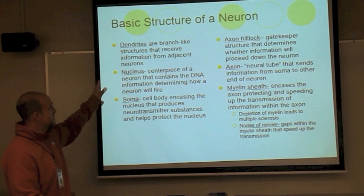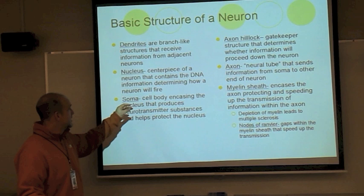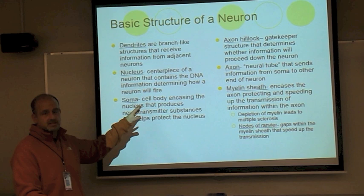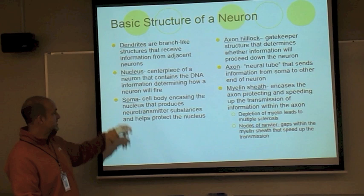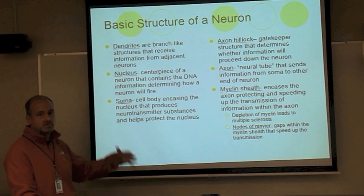In terms of the parts of the neuron, you have several distinct parts. Dendrites are the receiving part of the neuron — they receive the message from other neurons. The nucleus is the centerpiece of a neuron that contains DNA, which determines how the cell is going to fire — critical when we talk about action potentials. The soma is the cell body encasing that encases the nucleus and produces neurotransmitter substances.